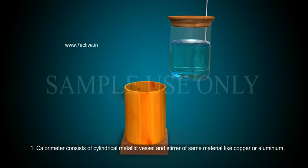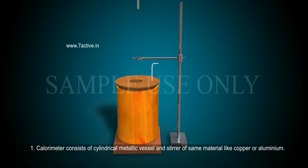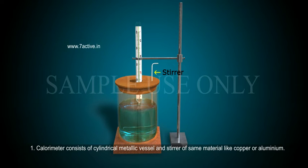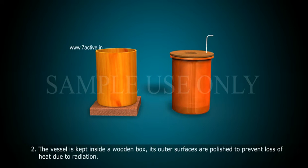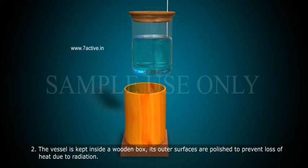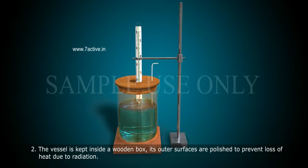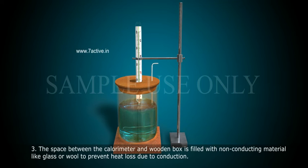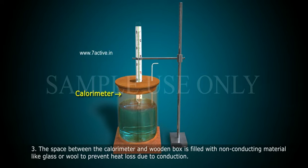A calorimeter consists of a cylindrical metallic vessel and stirrer of the same material, like copper or aluminum. The vessel is kept inside a wooden box, and its outer surfaces are polished to prevent loss of heat due to radiation. The space between the calorimeter and the wooden box is filled with non-conducting material like glass wool to prevent heat loss due to conduction.